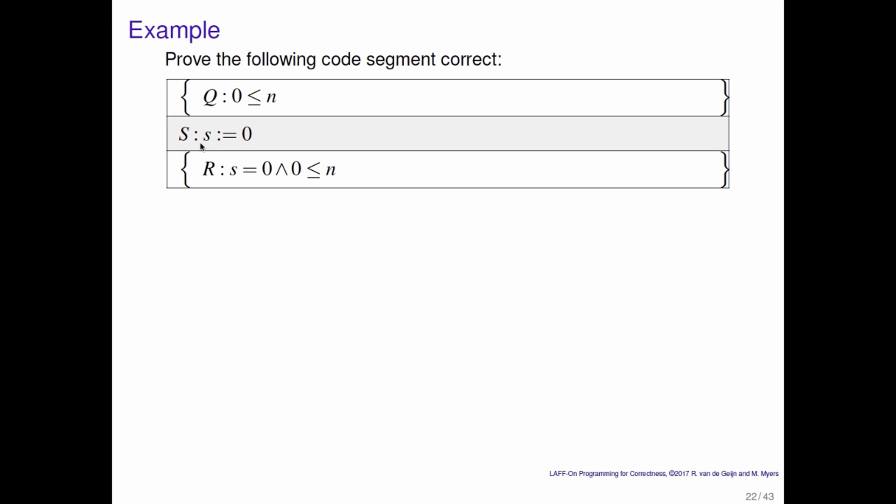Let's look at another example. This is actually an example that showed up in the launch. Recall that we started with 0 less than or equal to n there as a precondition for the whole program. The first statement was that 0 was assigned to s. And then we claimed that we ended up in a state where s is equal to 0 and 0 is less than or equal to n. Now we can now formally prove this correct. How do we do it?